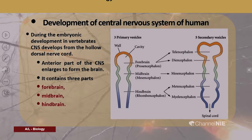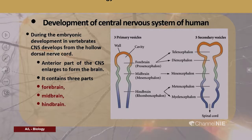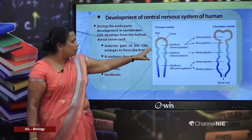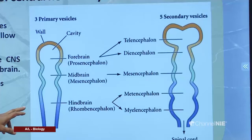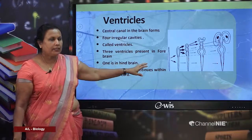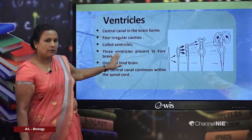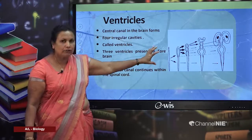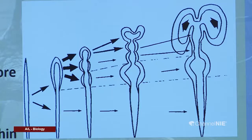During embryonic development in vertebrates, the central nervous system develops into two major parts: the brain and spinal cord. The anterior part of the central nervous system enlarges to form three vesicles, named forebrain, midbrain, and hindbrain. Ventricles are the four irregular cavities present within the brain, produced from the central canal as it develops anteriorly.